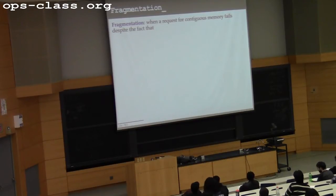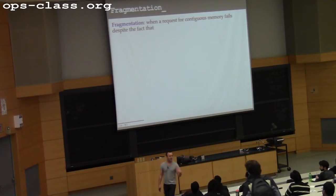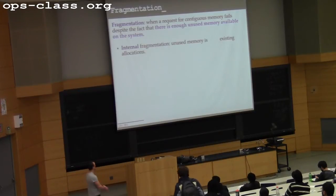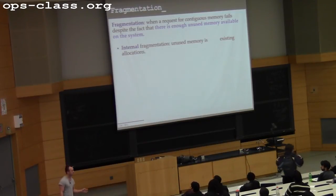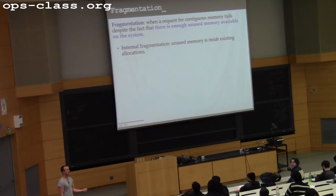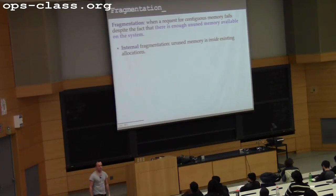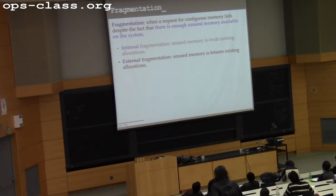Fragmentation is a problem. It occurs when I can't satisfy an allocation despite there being enough free memory — the amount of free memory on the system is greater than the request, but I still can't satisfy it. This happens for two reasons. In internal fragmentation, the unused memory is inside the allocations I've handed out — I gave out memory and some of it is not being used. In external fragmentation, the unused memory is between my allocations, so I have little chunks of memory but my request is for a contiguous chunk, and so I have to fail.